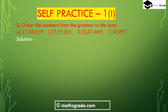Question number 3: order the numbers from the greatest to the least. We have to order these numbers in descending order. Option A: 17,30,619; 1,27,59,201; 3,18,47,409; and 7,30,897. Counting digits: 7,30,897 is a 7-digit number, and 3,18,47,409 and 1,27,59,201 are 8-digit numbers.